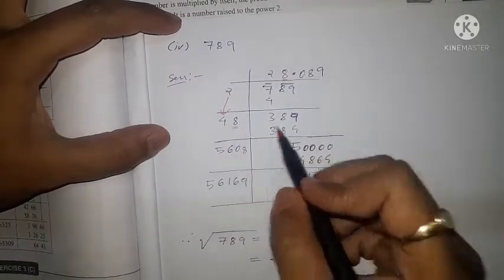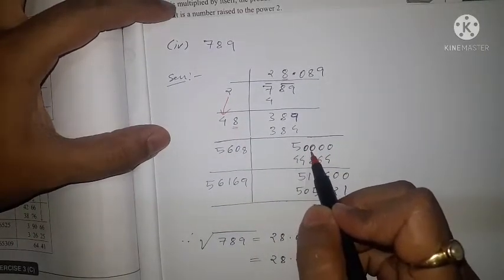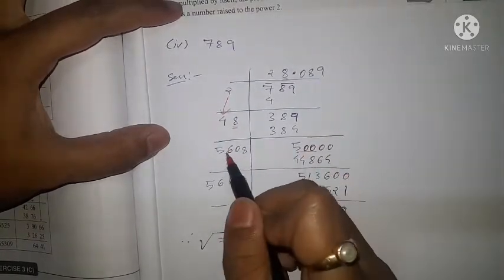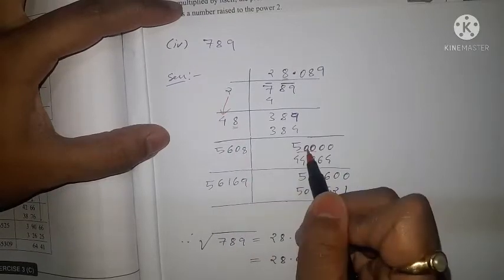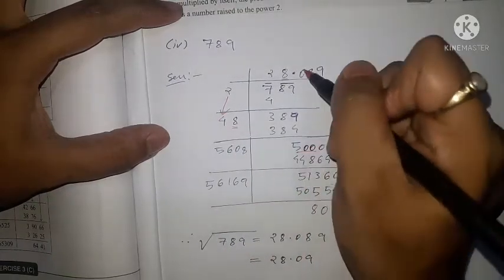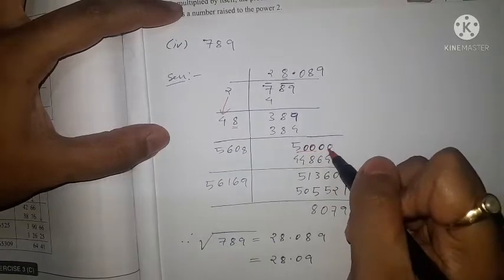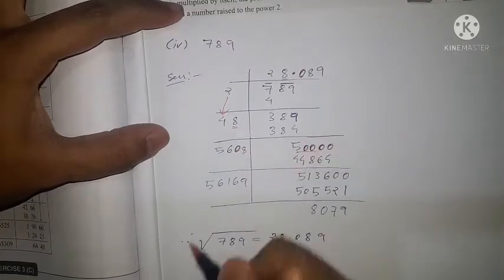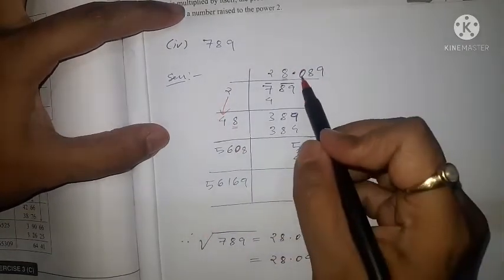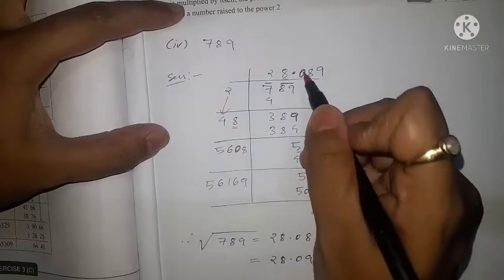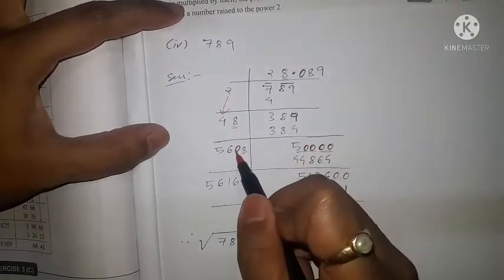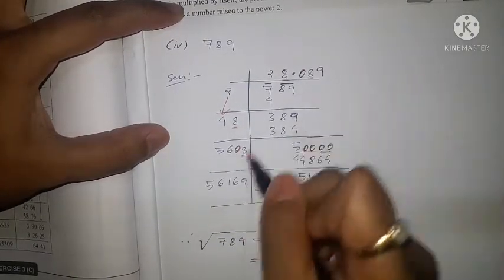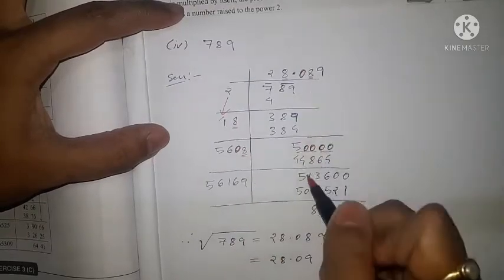When we put the decimal, two zeros come, making 500. Since the current divisor portion is already 56 and even putting 1 would exceed 500, we again need extra zeros. So we put one zero in the quotient and one zero in the divisor as well, giving 5608. Then 5608 × 8 = 44864.